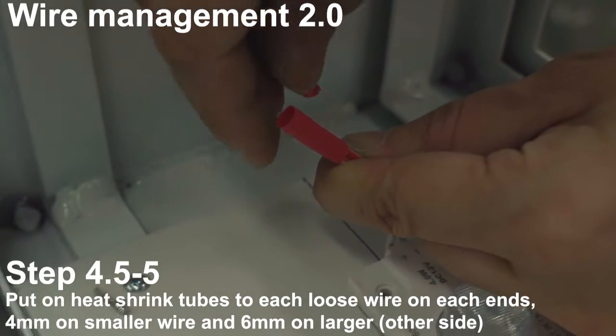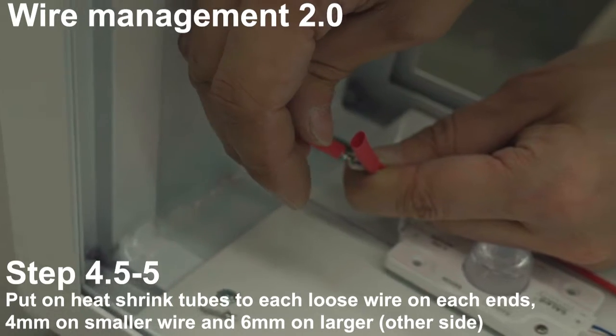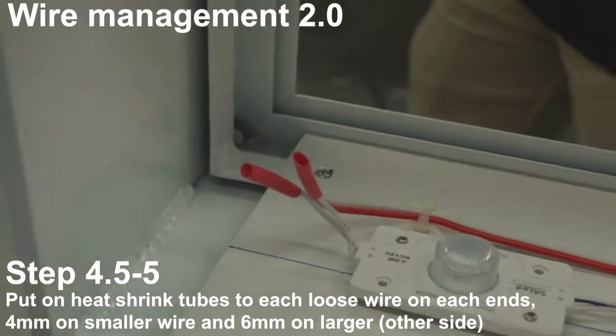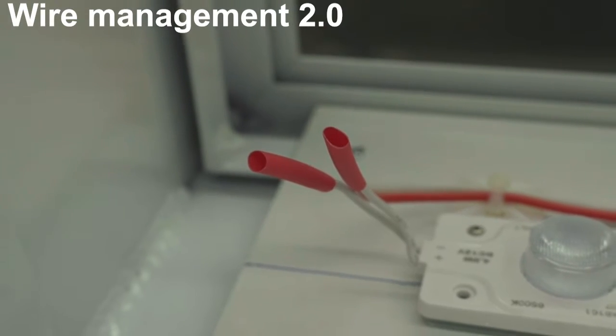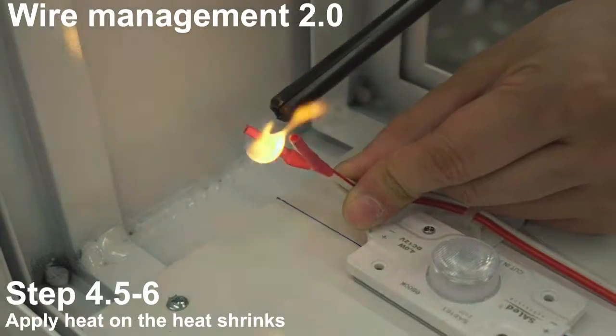Put on heat shrink tubes to each loose wire on each end, 4mm on smaller wire and 6mm on larger. Apply heat on the heat shrinks.